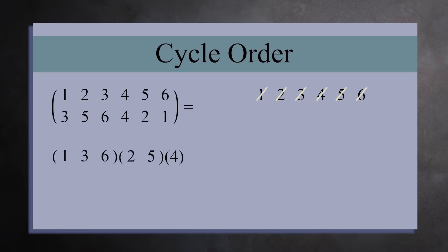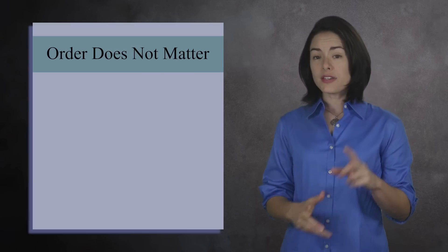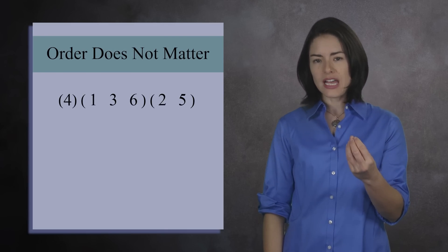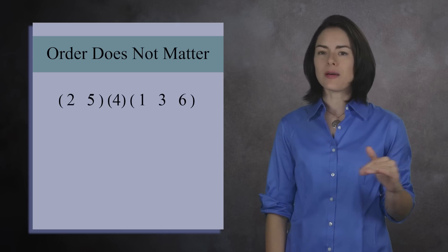4 goes to itself, so we get the 1 cycle 4. So this permutation can be written as a product of 3 cycles, 1, 3, 6, 2, 5, and 4. We don't bother writing a 1 cycle, so the permutation is a product of a 3 cycle and a transposition. When you write a permutation as a product of cycles, the order of the cycles does not matter. So we could write this permutation as a 3 cycle times a transposition, or as a transposition times a 3 cycle. This is an important point. When you decompose a permutation into a product of cycles, the order of the cycles does not matter.